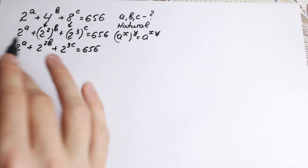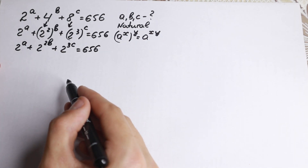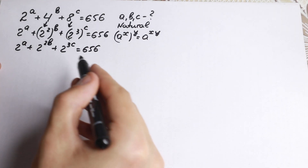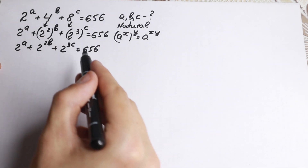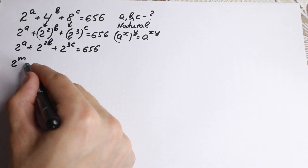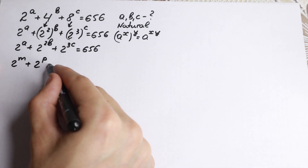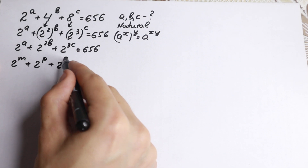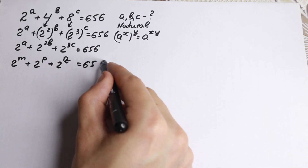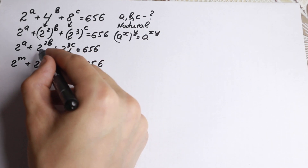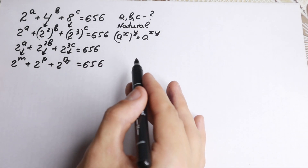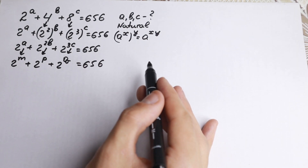Okay, we have this expression right now. I suggest a quick substitution because we have 2b and 3c, and it's not easy to work with these coefficients 2 and 3. Let's write 2 to the m plus 2 to the p plus 2 to the q equal to 656. This change, this change, and this change — though the order doesn't matter since all have base 2.